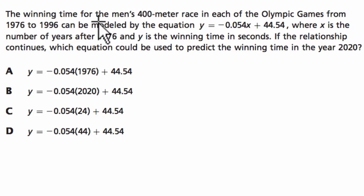Let's read the question. The winning time for the men's 400 meter race in each of the Olympic Games from 1976 to 1996 can be modeled by this equation: y equals negative 0.054x plus 44.54, where x is the number of years after 1976.